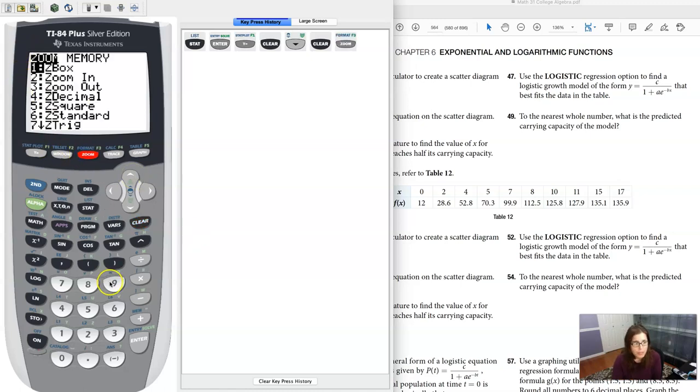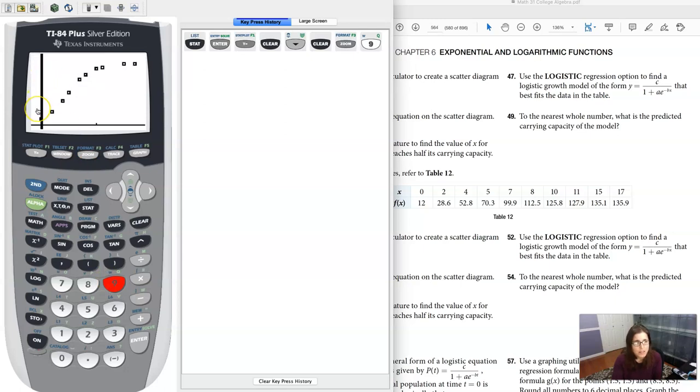You see I've got my scatter plot on. Let me hit zoom 9. It does look a little logistic. It almost kind of looks a little logarithmic too, but it says go ahead and do a logistic expression. So we're growing and then we kind of cap off here.